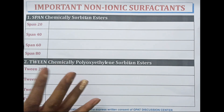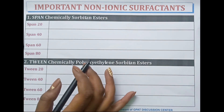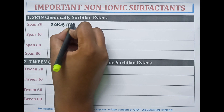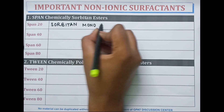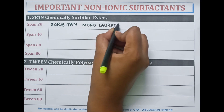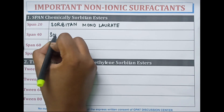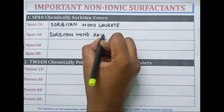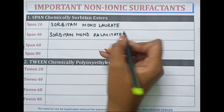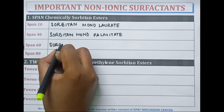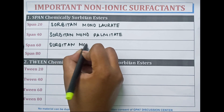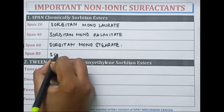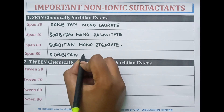Span, which are chemically sorbitan mono esters. Span 20 is known as sorbitan monolaurate. Span 40 is known as sorbitan monopalmitate. Span 60 is known as sorbitan monostearate. Span 80 is known as sorbitan monooleate.